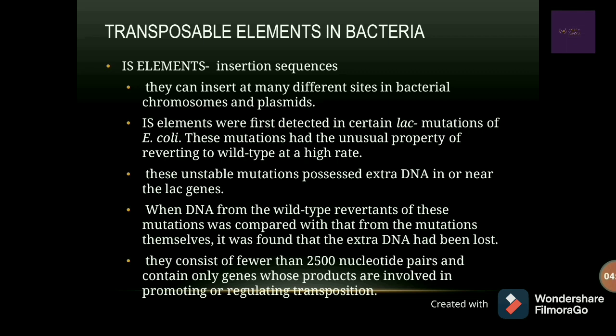Moving to transposon elements in bacteria — insertion sequences (IS elements) are cut and paste transposons that can be inserted at many different sites in bacterial chromosomes and plasmids, hence they are very common. IS elements were first detected in the lac-negative mutations of E. coli. These mutations had the unusual property of reverting back to the wild type at a very high rate. These unstable mutations possessed extra DNA in or near the lac genes.